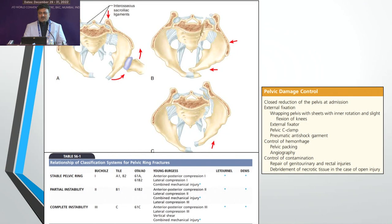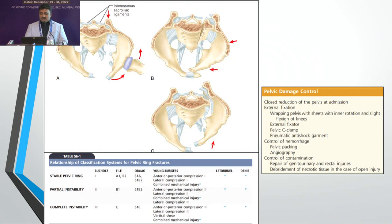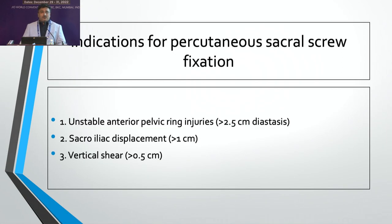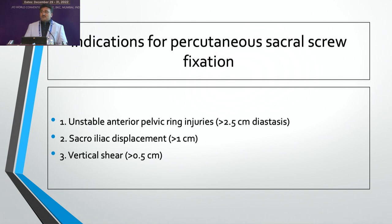Apart from pelvic damage control — including external fixation, wrapping pelvis, pelvic compression bandage, external fixator, pelvic C-clamp, and embolization of pelvic vessels — we have to deal with unstable pelvic injuries. What are the indications of percutaneous fixation? Any unstable anterior ring injury involving pubic diastasis more than 2 cm, any sacroiliac displacement more than 1 cm, and any vertical shear injury more than 0.5 cm needs to be fixed.